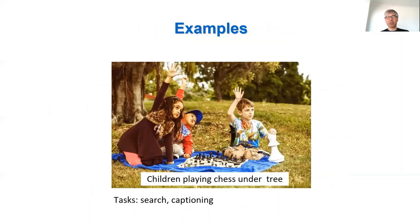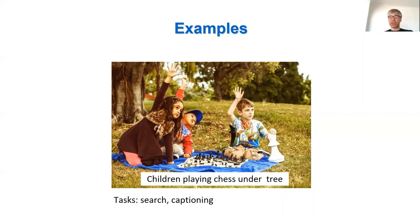Let's see examples of dynamic scenes and also tasks we may want to address in relation to them. Here is an image of children playing chess under a tree, and you can imagine a task where we have a text-based video query — YouTube and other platforms which want to search such scenes by just typing text — or maybe you want to caption these scenes automatically. This is one task which implies that we should interpret images or videos in relation to text.